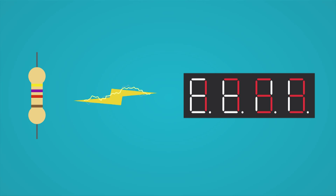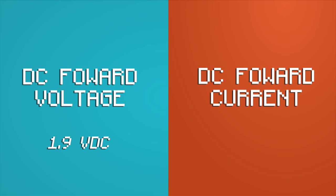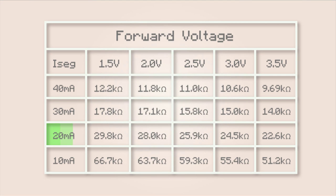Its job is to limit the current, preventing damage to the chip and the LEDs from excessive currents. The two things that must be known before selecting a resistor value are the DC forward voltage and the DC forward current of the LEDs. With a forward current of 20 milliamps and a max forward voltage of 1.9 VDC, something close to a 28.0K ohm resistor would be ideal according to the table.